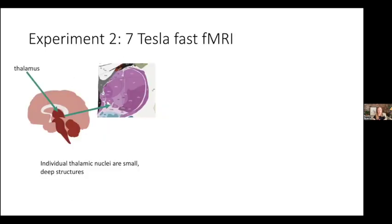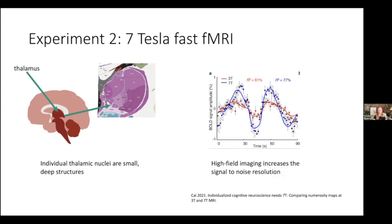Next we wanted to investigate the dynamics of individual nuclei of the thalamus — our primary goal. The thalamus is very deep in the brain and its individual nuclei are very small, so we did this at 7 Tesla rather than 3 Tesla, because the higher magnetic field strength substantially increases signal-to-noise ratio. The BOLD signal during a stimulus at 7T shows much higher SNR compared to 3T, enabling us to capture information from individual thalamic nuclei.